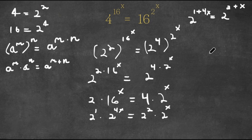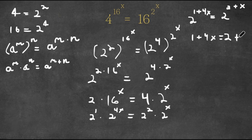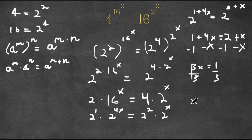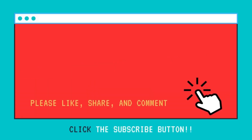Now, again because the bases are the same, this also means the exponents are the same. So now we have 1 plus 4x is equal to 2 plus x. If we subtract x on both sides and also subtract 1 on both sides, we get 3x is equal to 1. Now if I divide by 3 on both sides, these two cancel out and I get x is equal to 1 over 3. So this is our answer.